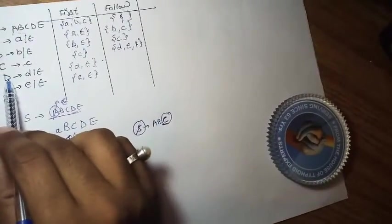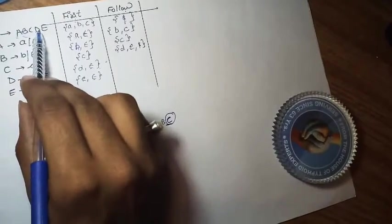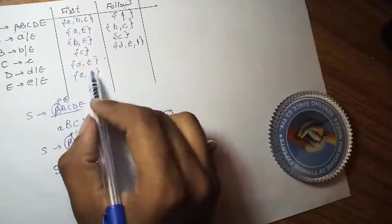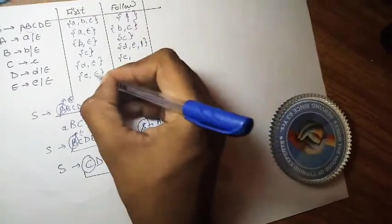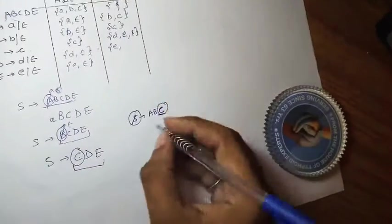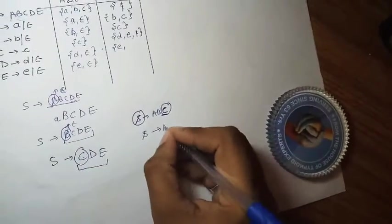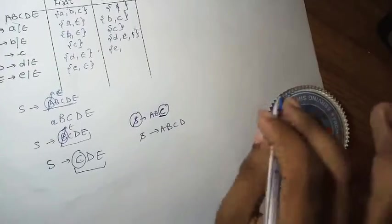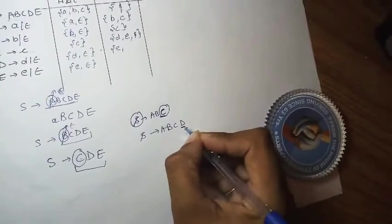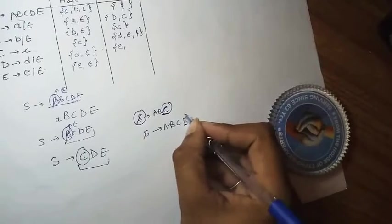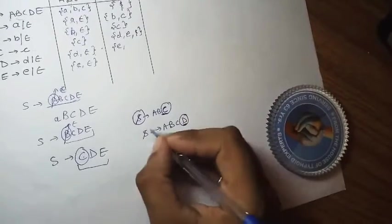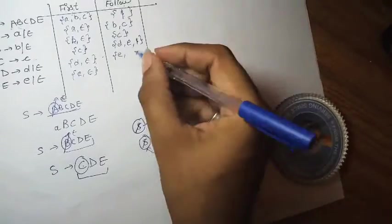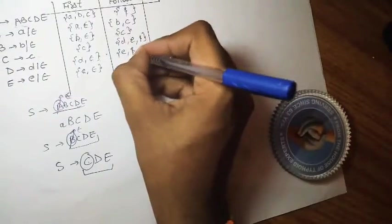For FOLLOW(D), D appears in the string A B C D E. What follows D is E. FIRST(E) = {e, ε}. We add small e. Since epsilon is in FIRST(E), E can vanish, and D is now at the end of the production. By the same rule, FOLLOW(D) inherits FOLLOW(S) = {$}. So FOLLOW(D) = {e, $}.